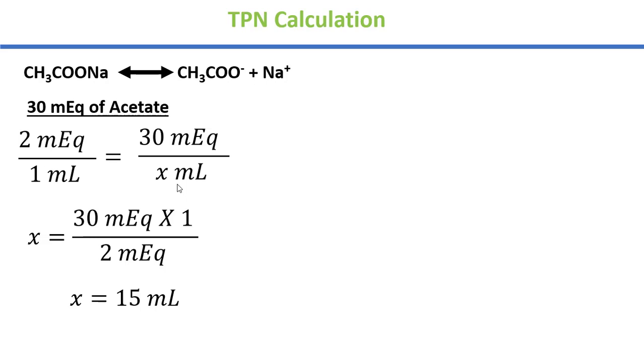So sodium acetate solution has to be 15 mL. Remember that acetate has to be used as sodium acetate. Because dissociate hoga to acetate aur sodium combined form acetate. So you can calculate the amount of sodium that has to accompany this acetate.